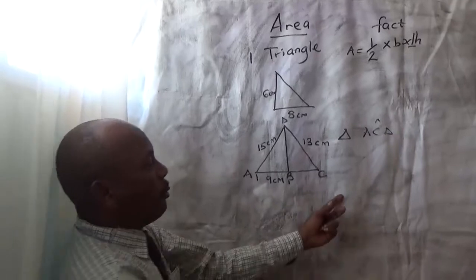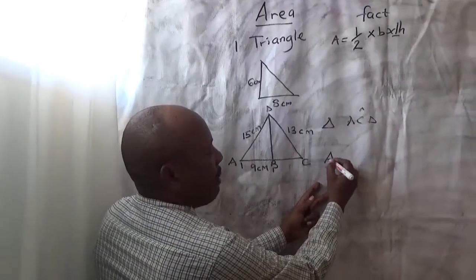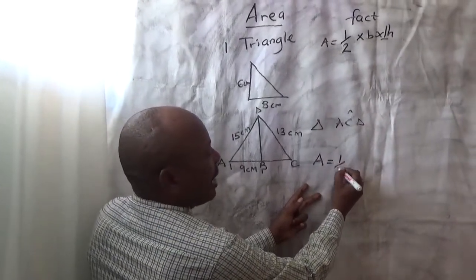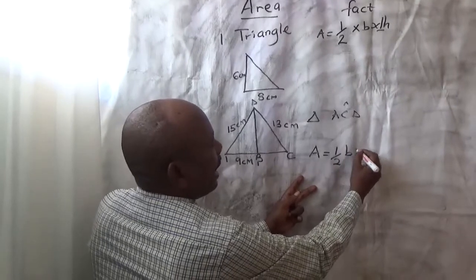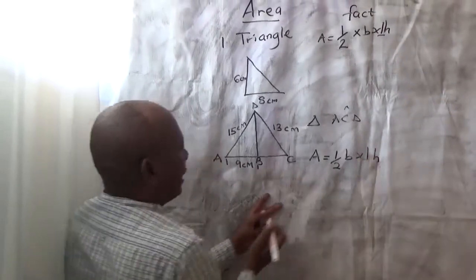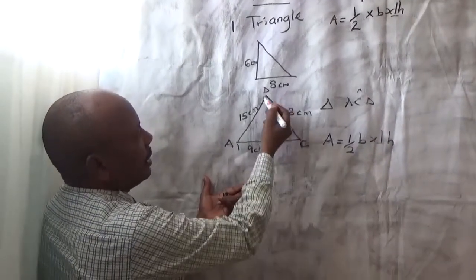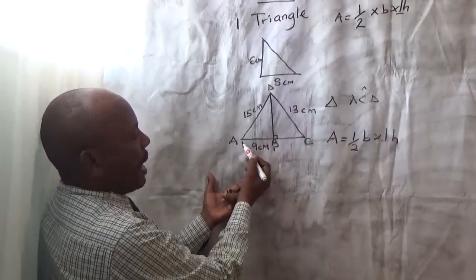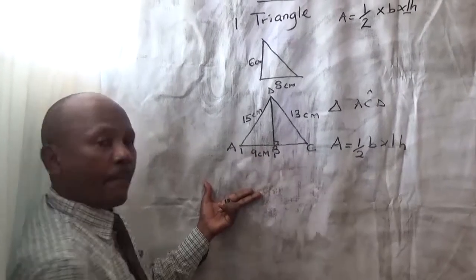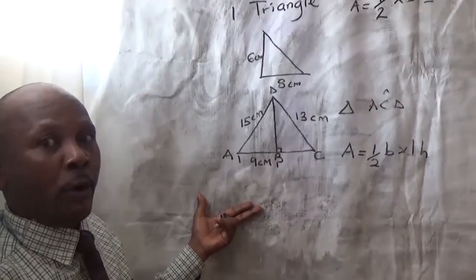From the concept there, we check our variables. Remember, area of a triangle is half times base times perpendicular height. If you look at this triangle, we have our perpendicular height there, DB. We have our base, AC. But none of the variables is given.